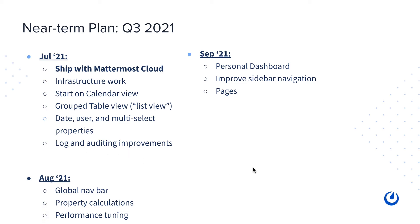In August, we're going to invest more in integration work. There's something called the global nav bar coming soon, and features such as property calculations on tables and boards, plus further investments in performance and infrastructure. In September, we have the personal dashboard, which brings a bird's eye view of all your workspaces in one place, as well as improvements to sidebar navigation and a pages feature — the v1 step toward the wiki page feature mentioned earlier.